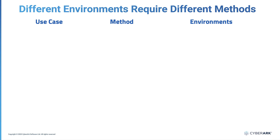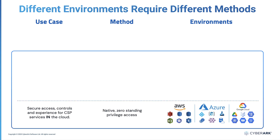We are starting with services running in the cloud — all the native services that are provided by the cloud service providers, CSPs. Each of the three major CSPs now has hundreds of services and provides granular native controls to each of those services. There are now over 30,000 entitlements across AWS, Azure, and GCP. In other words, that is the front door to the cloud environment — the cloud console and CLI.